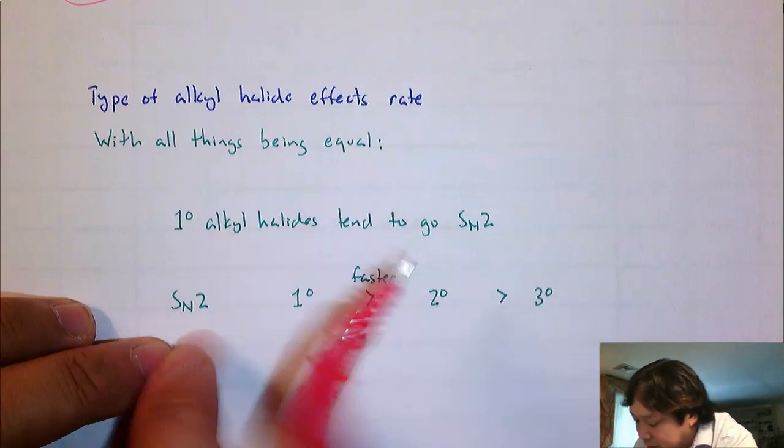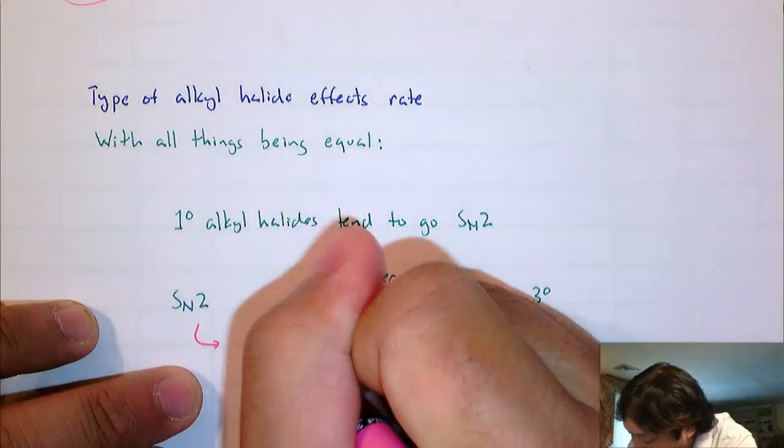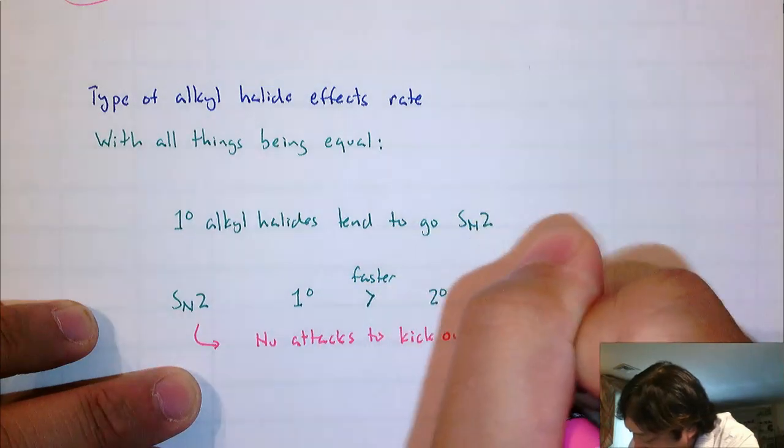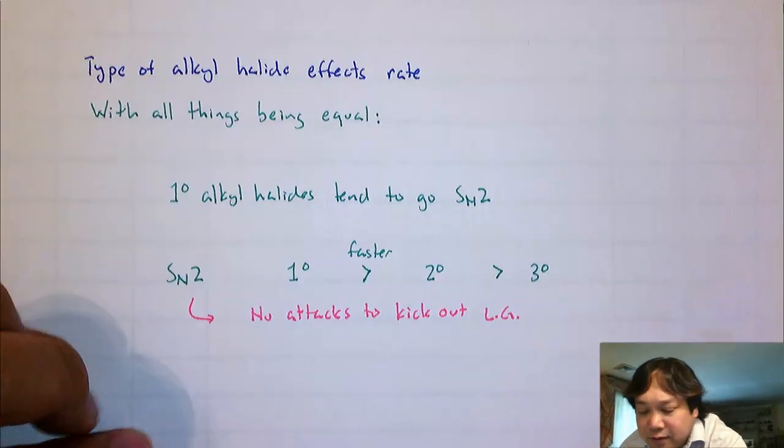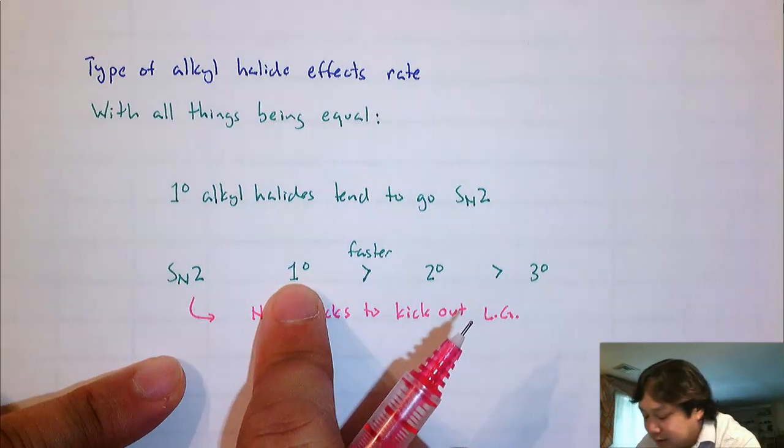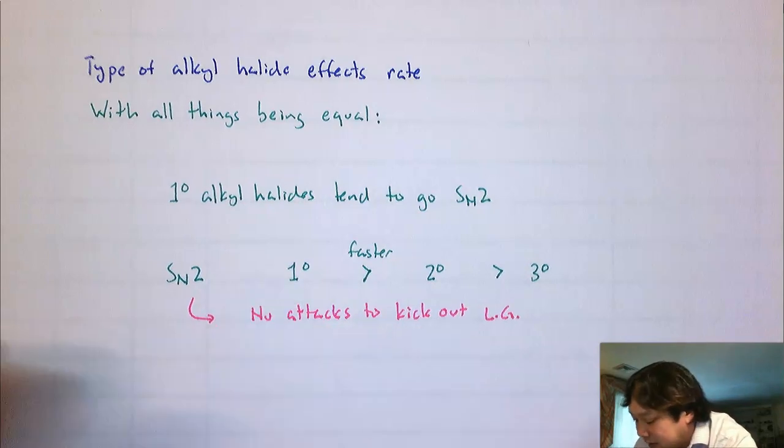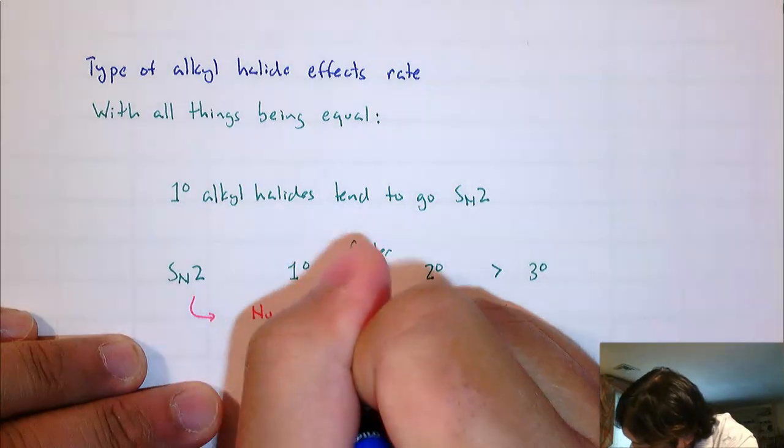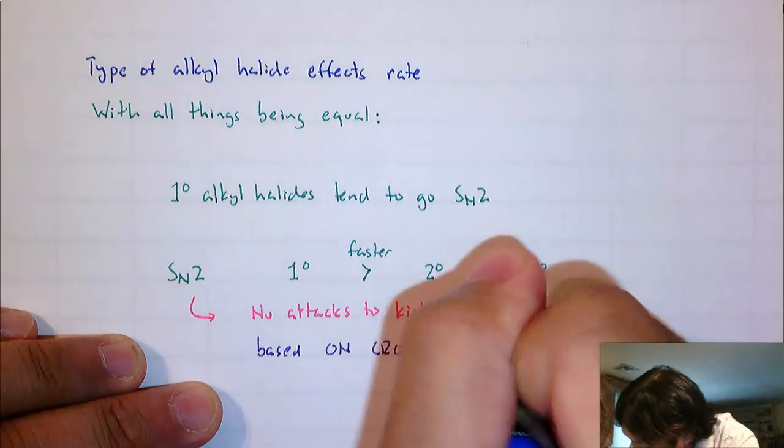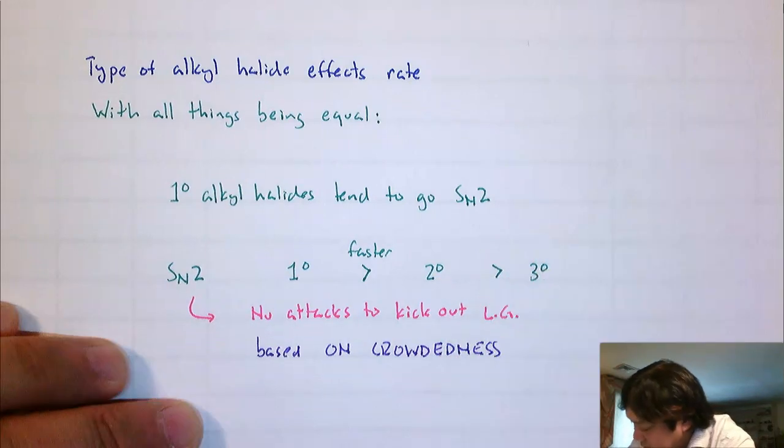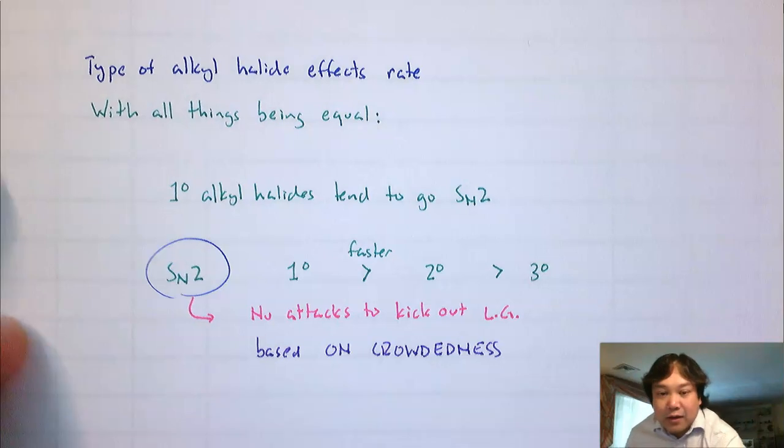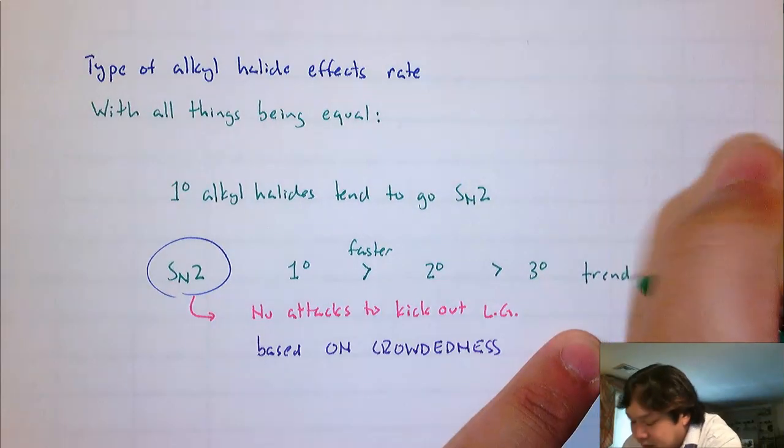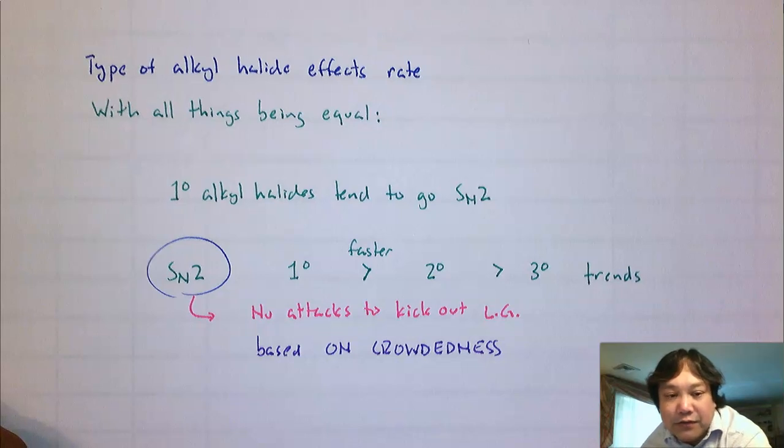That's the case because in an SN2 process, the nucleophile attacks to kick out the leaving group. So it's logical that the less crowded your alkyl halide is, the easier it is for the nucleophile to attack. So this is based on crowdedness. That's your trend for SN2. We're going to try to memorize these trends and apply them when we look at reactions and try to predict whether a certain substitution reaction goes via SN1 or SN2.